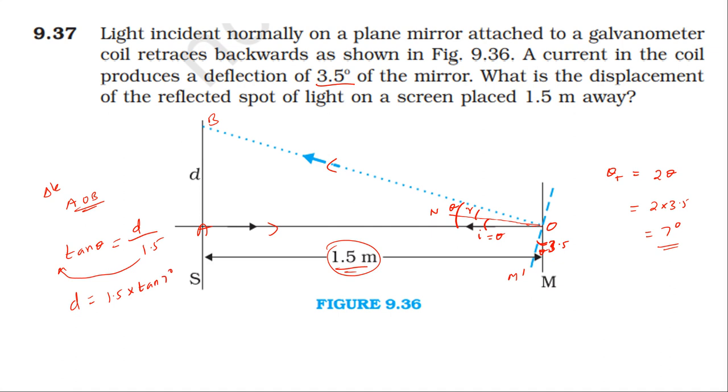Converting 1.5 meters to centimeters gives 150 centimeters. So 150 times tan 7 degrees equals 18.4 centimeters. The displacement of the spot is 18.4 centimeters.